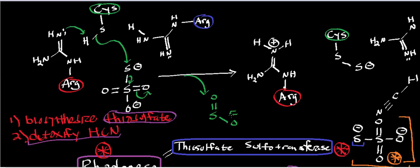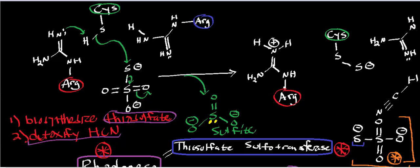You might be tempted to say sulfite is a trigonal planar molecule, but just remember that when we got nucleophilic attack on the sulfur and we lost sulfite, two electrons ended up on the sulfur atom. So this is actually not trigonal planar — it's going to be a tetrahedral molecule, which is really strange. But sulfur is below the second period on the periodic table, so it can violate the octet rule. In this step, we used thiosulfate as a sulfur donor, we end up with sulfite as the leaving group, and that sulfur atom is now more reduced.